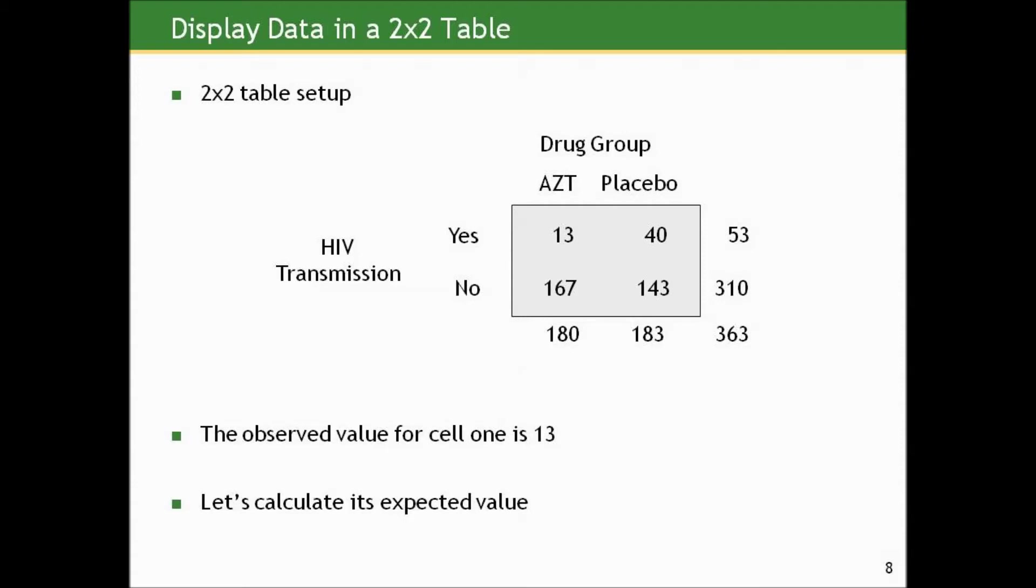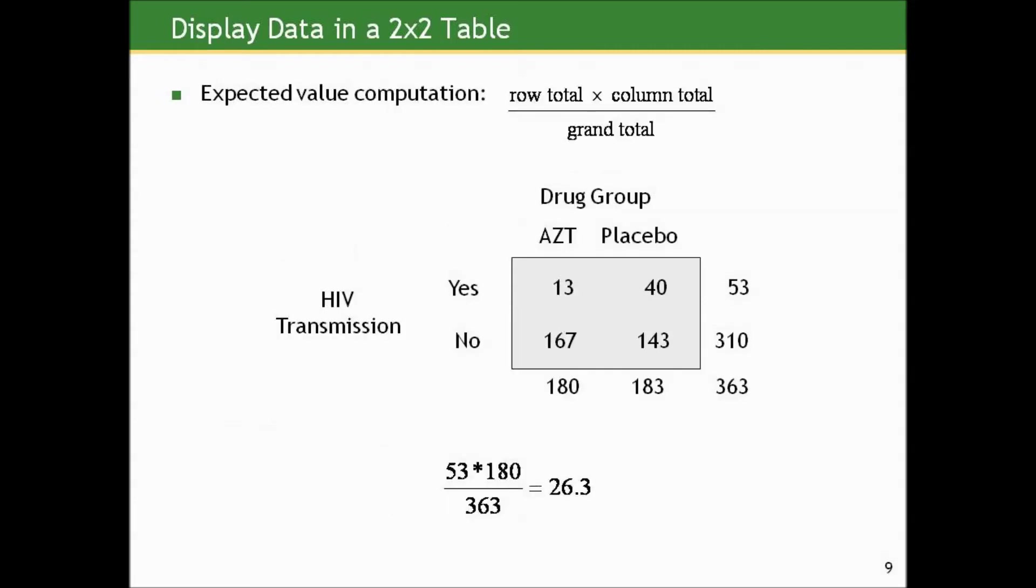So let's show this computationally. Here's the two-by-two setup for the HIV infant transmission AZT study. Here are the observed cell counts for the study. The observed cell count for cell one is 13. That is, there were 13 infants whose mother were given AZT who contracted HIV within 18 months of birth. Let's calculate the expected value under the null that the proportion of infants contracting HIV is the same at the population level between the AZT and placebo groups. So if we do this by our computation taking the row total times the column total dividing by the overall grand total, that would give us 53 times 180 over 363 gives us an expected count of about 26 infants. 26.3 is what the computation says. This is a theoretical number were the null true, so we can have non-integer values.